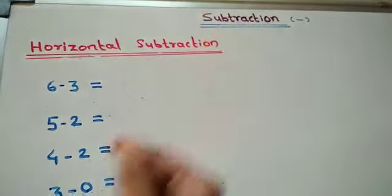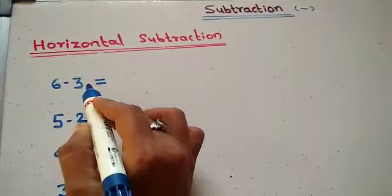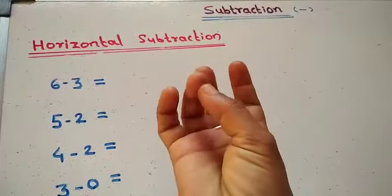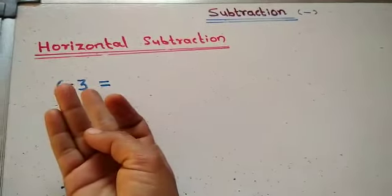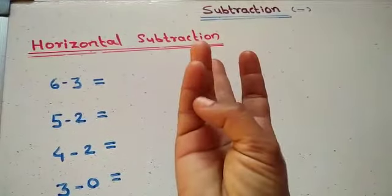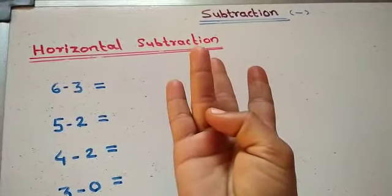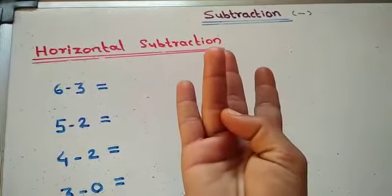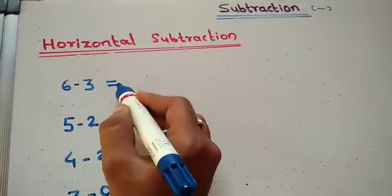Students, now let's solve this example: 6 minus 3. Count the number 6: 1, 2, 3, 4, 5, 6. Now minus 3 — remove 3 sections: 1, 2, 3. How many sections are left? 1, 2, 3 — 3 sections. So 6 minus 3 is equal to 3.